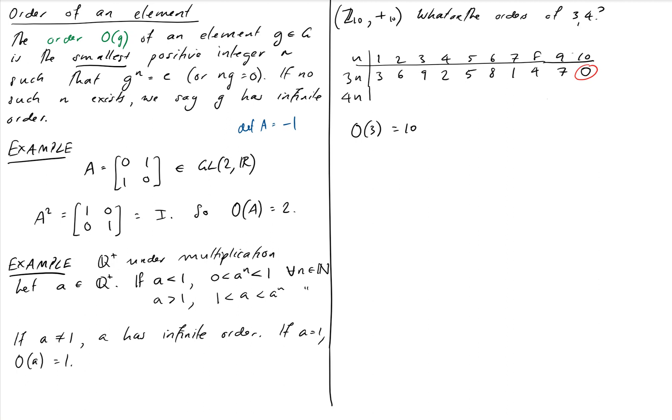I need to add 10 of them together before I get back to 0. Now we'll go to 4. 4×1 is 4, 4×2 is 8, 4×3 is 12, which becomes 2. Plus 4 is 6, plus 4 is 10, which is 0. So 4, we get there more quickly. So the order of 4 is equal to 5.